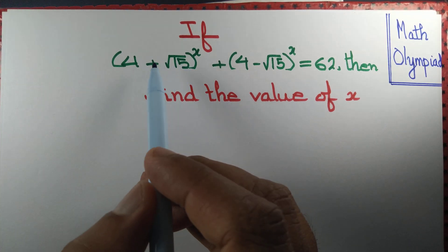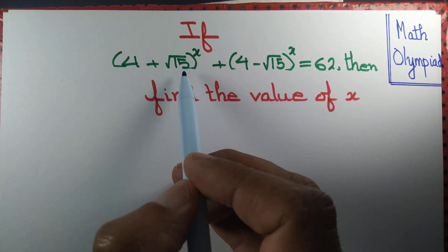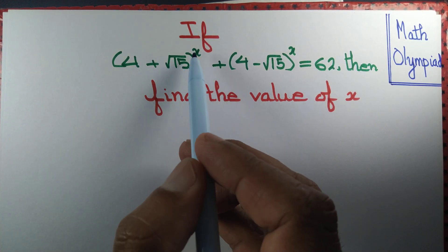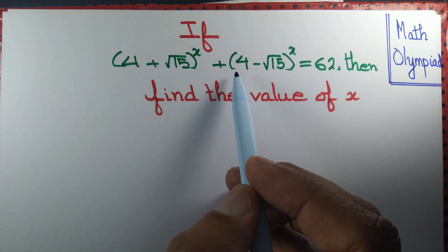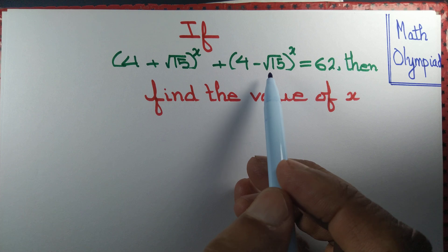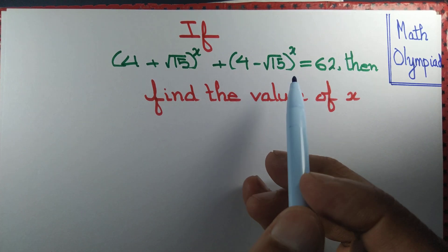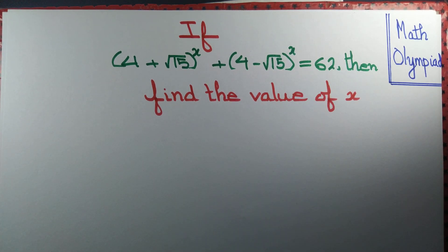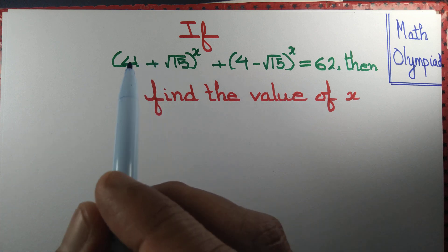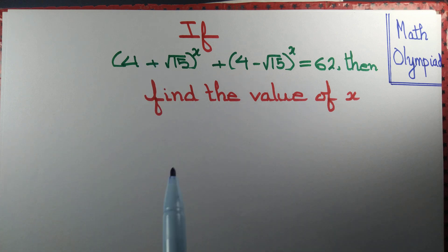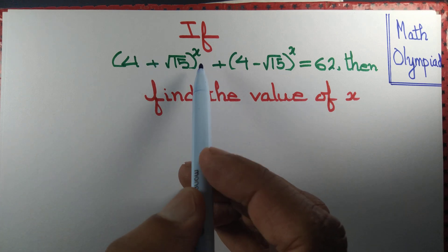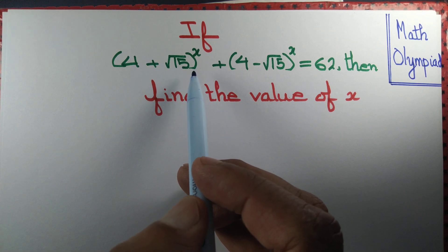Let us determine the number x such that (4 + √15)^x + (4 - √15)^x = 62. How shall we start? We seem stuck on how to start at all.